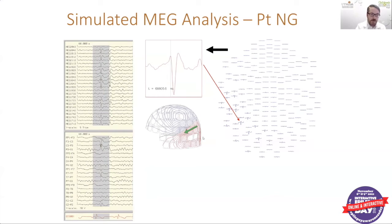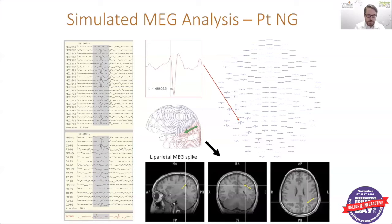One of the most interesting parts of the MEG is that we take that MEG signal — we call it the dipole — and we're able to fit or estimate on the patient's own MRI the origin of that activity. Here you can see the MRI, remembering it's reversed so left is on the right and right is on the left, as we're looking from basically underneath the patient. You can see that it's kind of in this left posterior area.